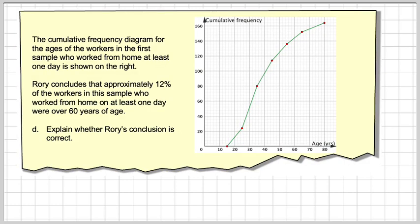The cumulative frequency diagram for the ages of the workers in the first sample who worked at home for at least one day is shown on the right. Rory concludes that approximately 12% of the workers in this sample who worked from home on at least one day were over 60 years of age. Explain whether Rory's conclusion is correct.